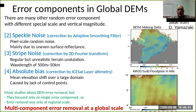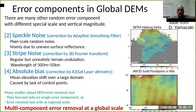Digital elevation models can come in different forms and these different forms have errors due to processing and acquisition. In the radar scattering — in those built by radar — there are different kinds of noise like pixel random noise due to the radar acquisition.